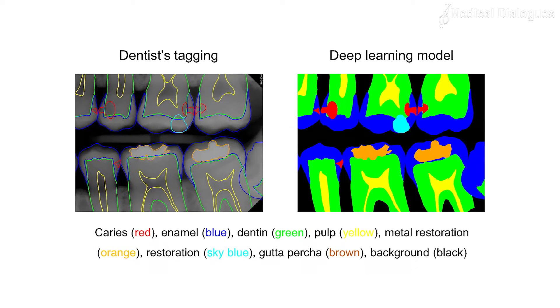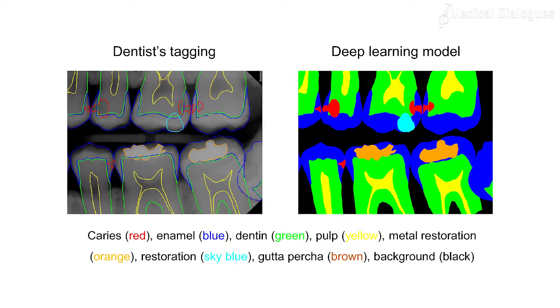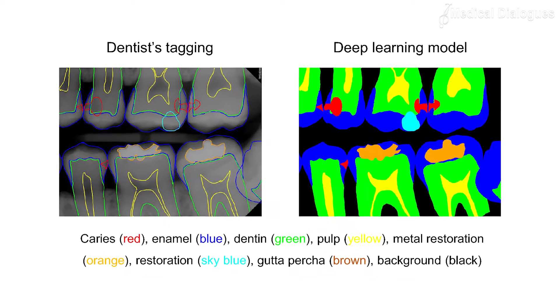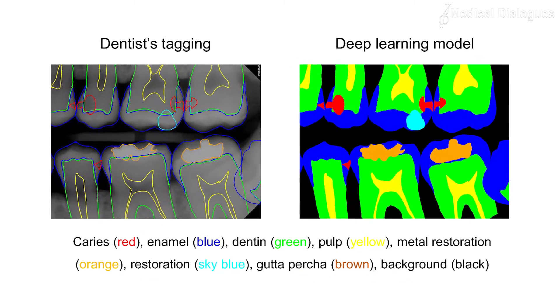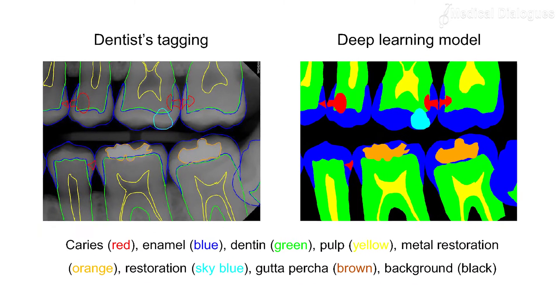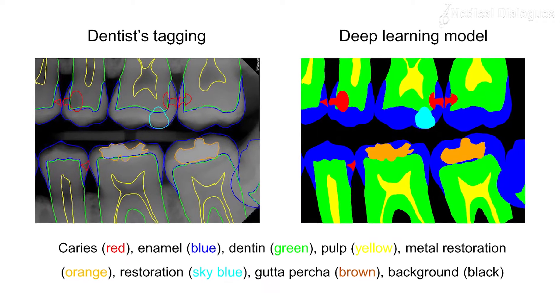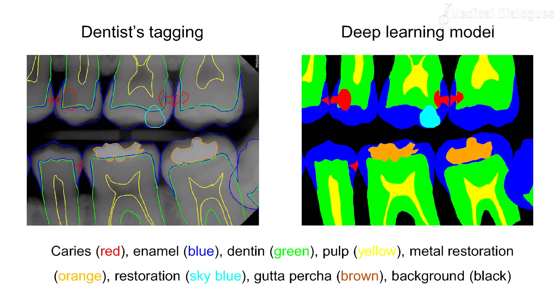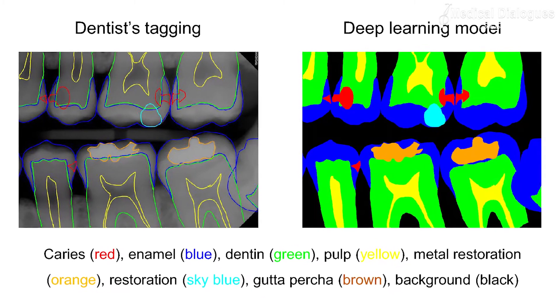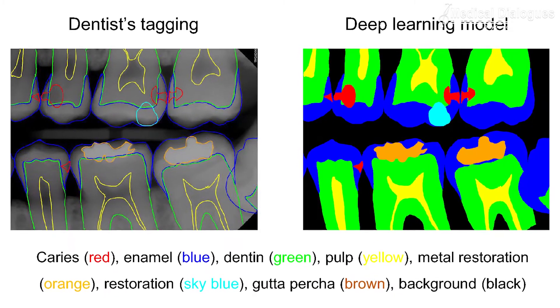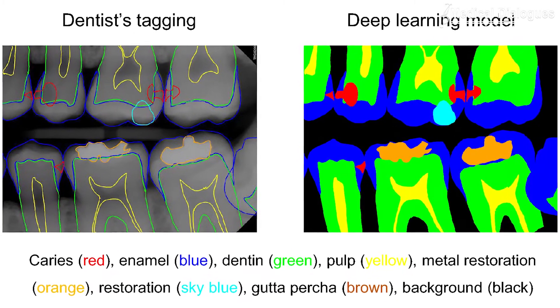Previous studies have examined the use of artificial intelligence to detect caries, root fractures, and apical lesions, but there is limited research in the field of periodontology.